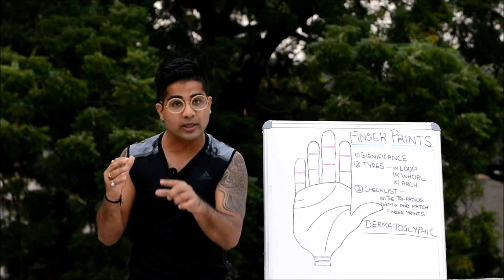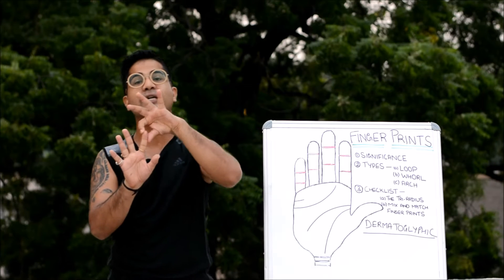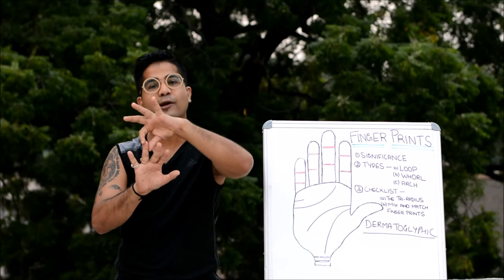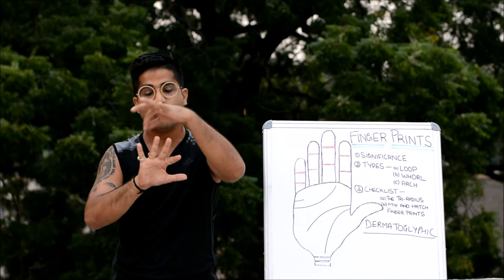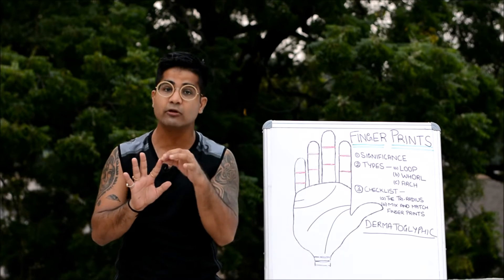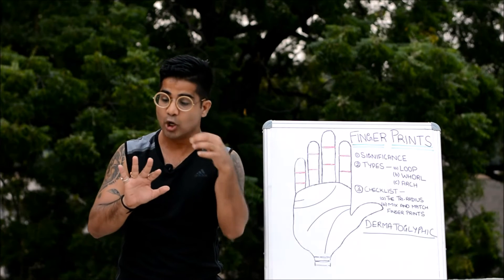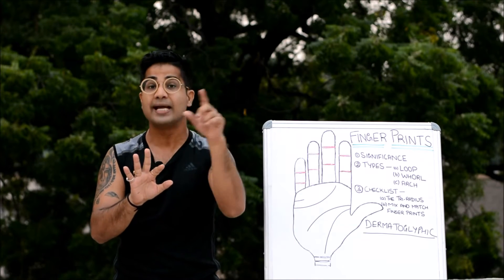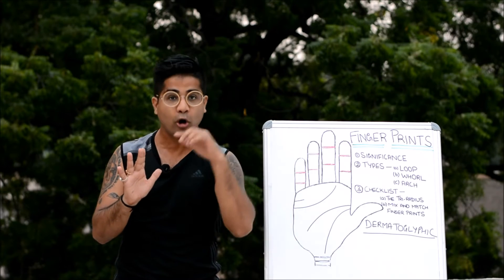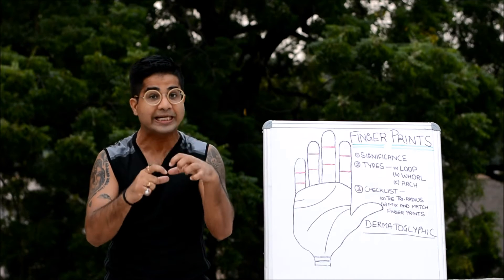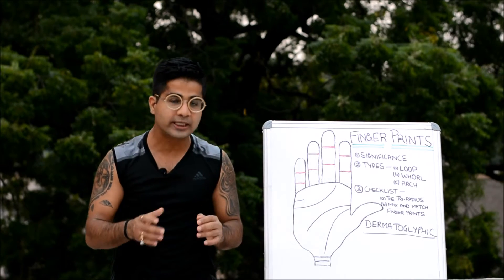Fingerprints tell you about an individual's approach and attitude towards the signification of different fingers and mounts. As you know, the index finger is the finger of the leader, the middle finger is the finger of the scholar, the ring finger of the artist, and the little finger of the businessman and communicator. Fingerprints tell you what kind of leader or artist you will become — whether you'll be people-oriented or dictatorial, whether you'll focus on money or creative work. These are innate personality traits you are born with, revealed through fingerprints.